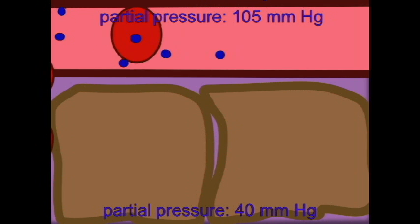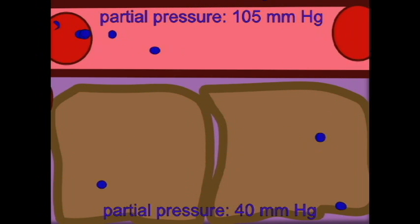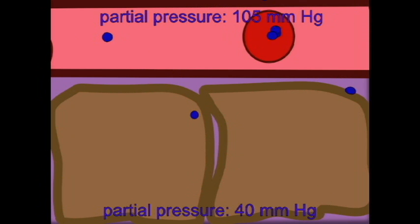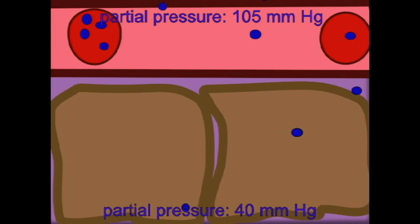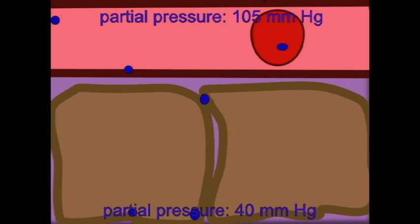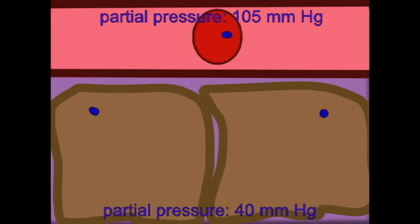If oxygenated blood has a partial pressure of oxygen of around 100 and that of a tissue is around 40, then oxygen will go from an area of high partial pressure to low and leave the blood for the tissue.